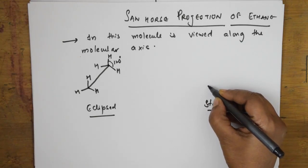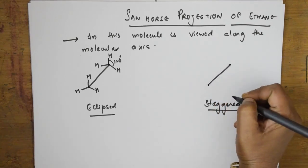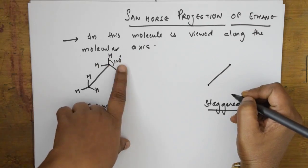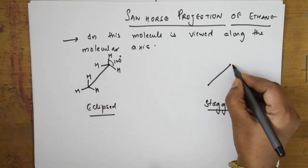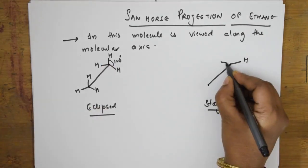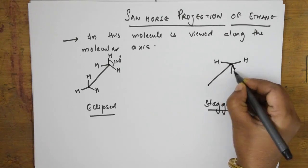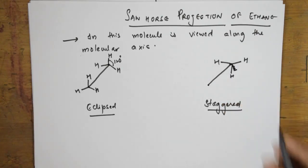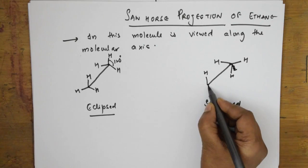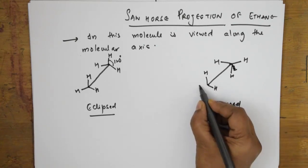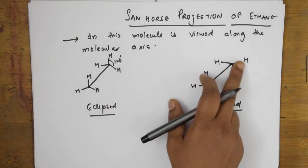When drawing the staggered form in sawhorse projection, observe carefully — one carbon, another carbon, with more spacing between them. In the staggered form, hydrogens are placed in a staggered arrangement. This is the eclipsed form and this is the staggered form where all the hydrogens are equally spaced.